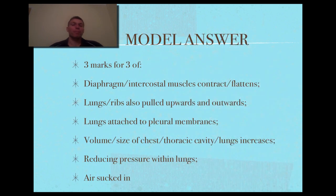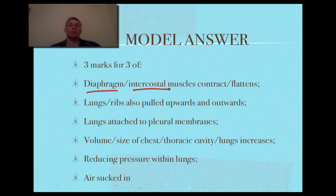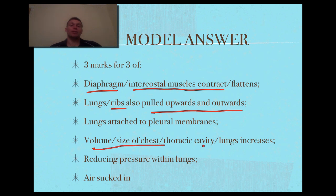Then you'll see the model answer — including the mark scheme — which is hopefully quite simple. We've got the diaphragm and intercostal muscles being contracted, those ribs being pulled upwards and indeed outwards, and then the fact that the volume or size of the chest increases. Air is then sucked in, which allows oxygen to become available and the process of gaseous exchange can occur.